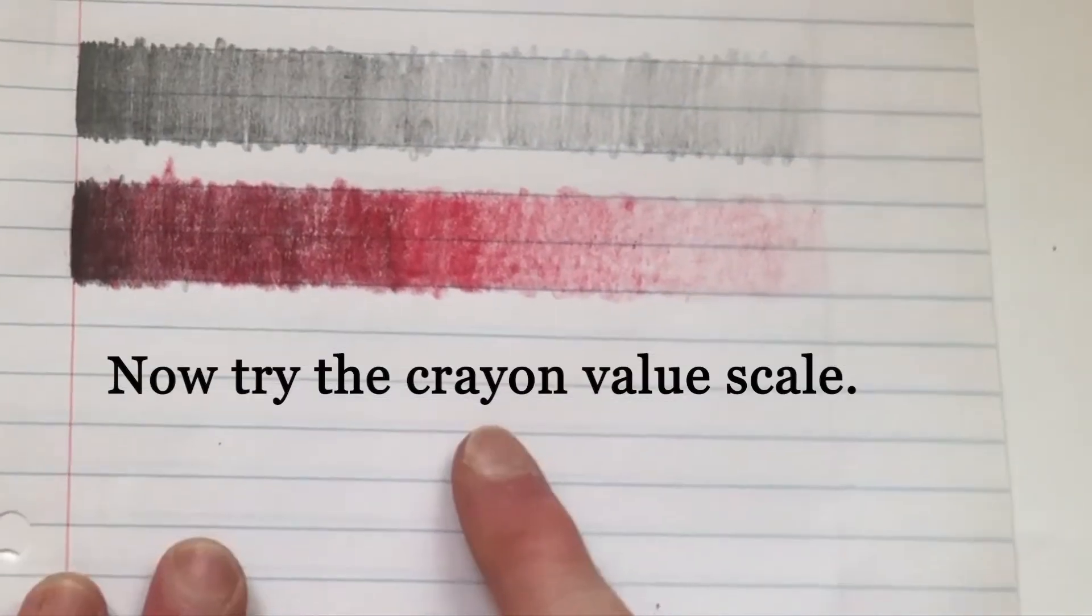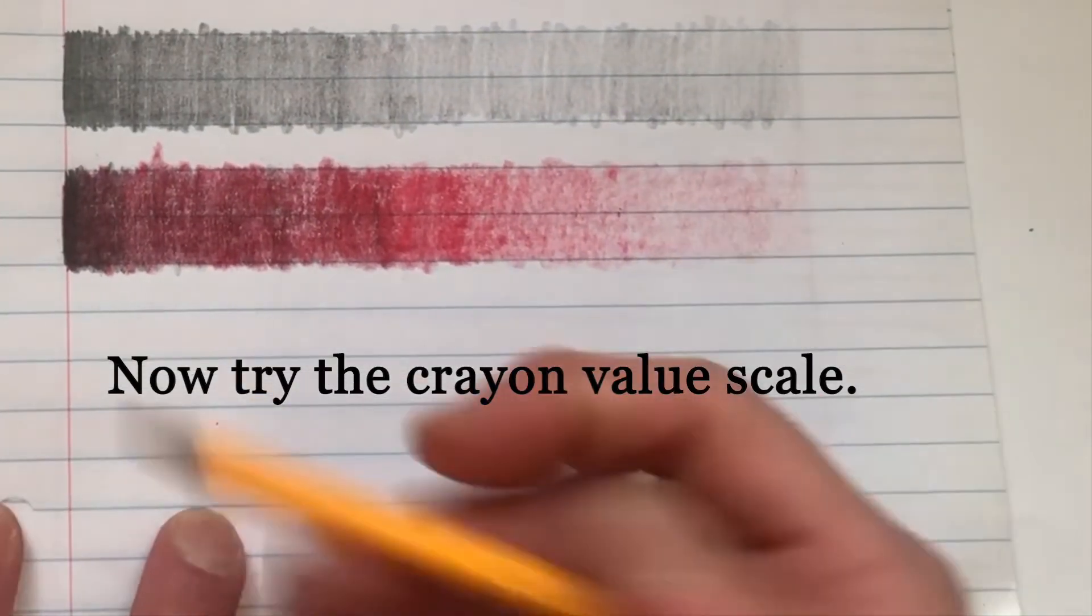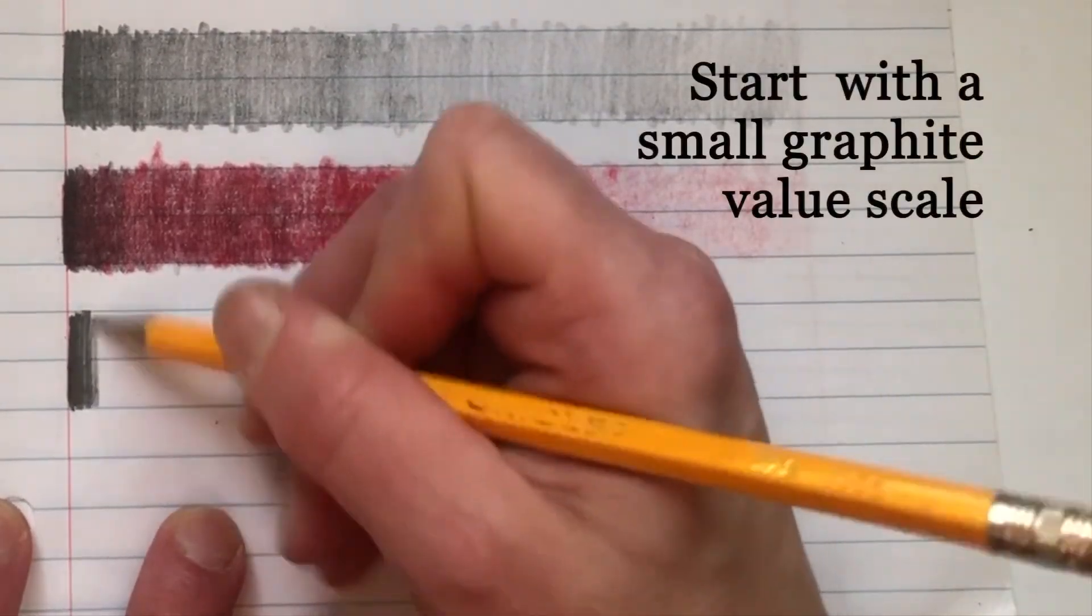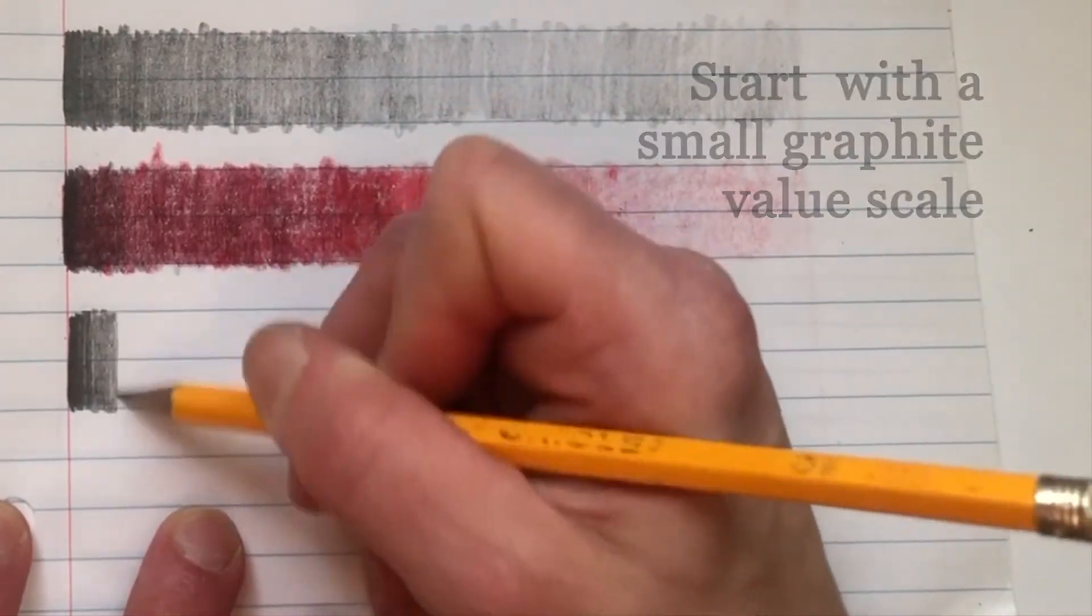And the last value scale will be crayon. Again, full value. You have to press as hard as you can.